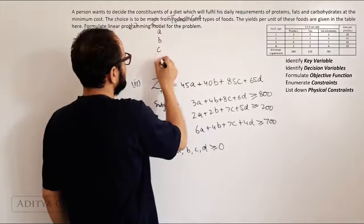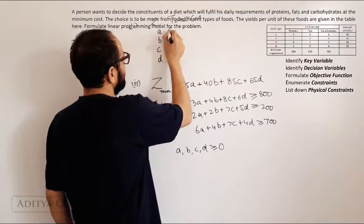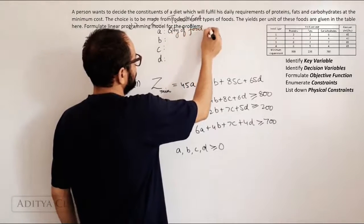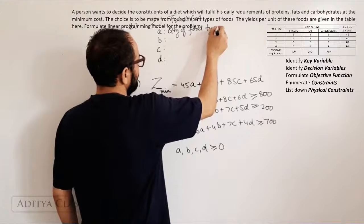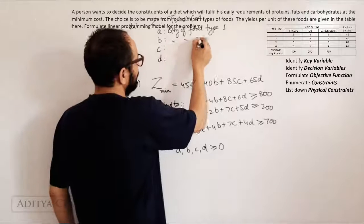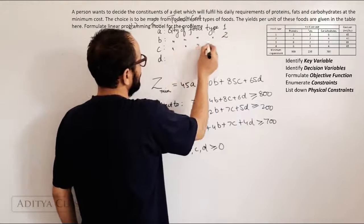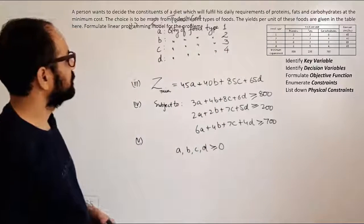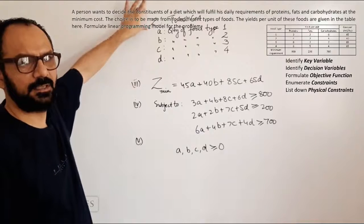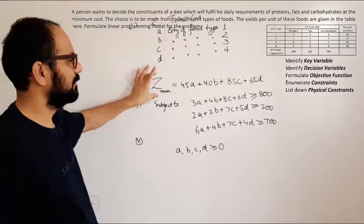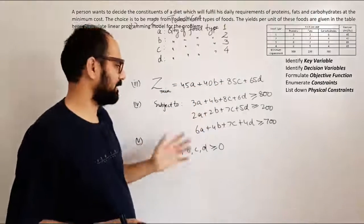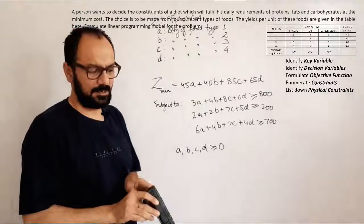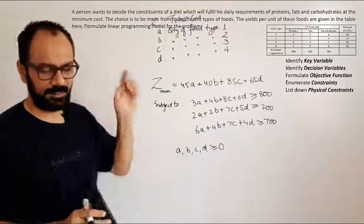And then what are A, B, C and D? Quantity of food type one, quantity of food type two, quantity of food type three, quantity of food type four. So here we have our declarations of variables: key variable, decision variables, objective function, constraints and physical constraints. So these are our five steps and this is the formulation for the given problem.